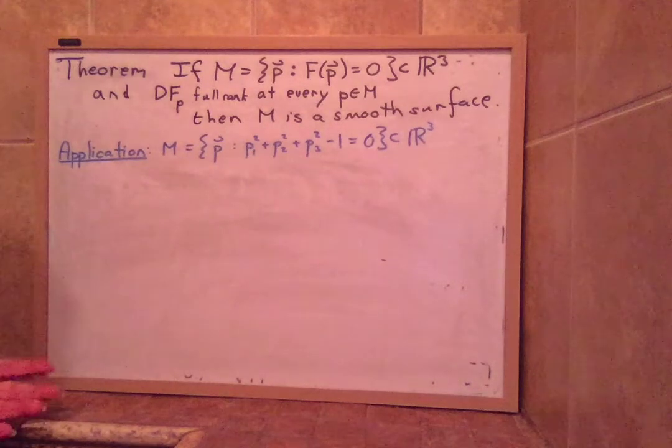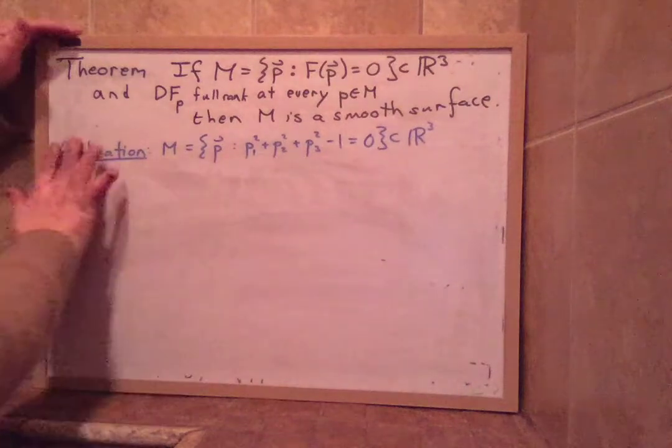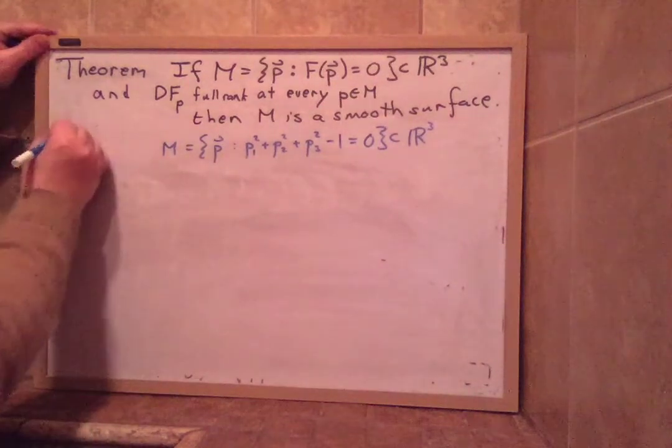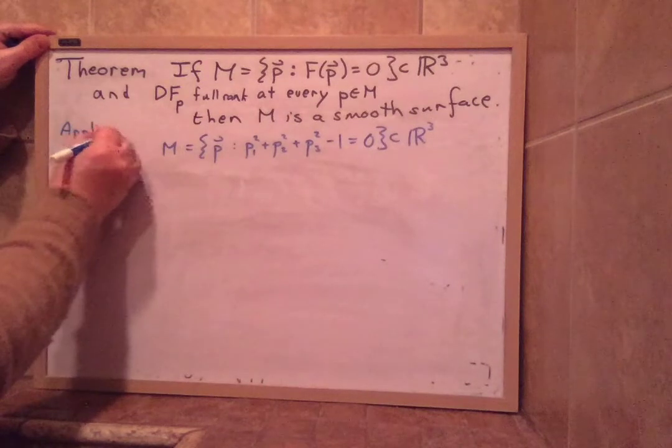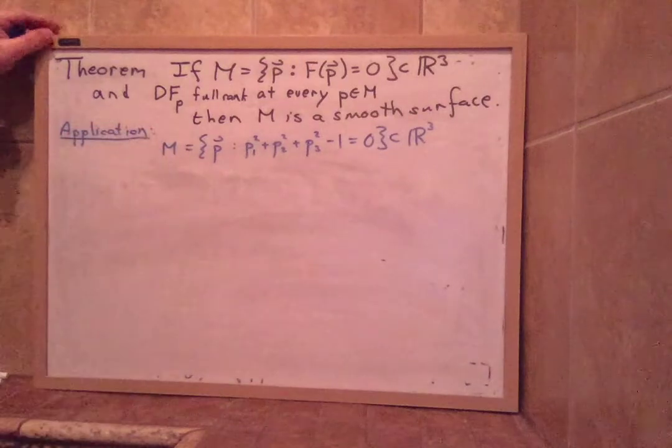Hi, so I just want to do one example where we try to actually apply this theorem to a particular implicitly defined set. We're just going to do the sphere first because that one's very easy to see and then we can look at some of the other ones.